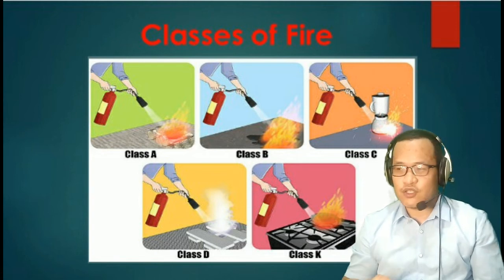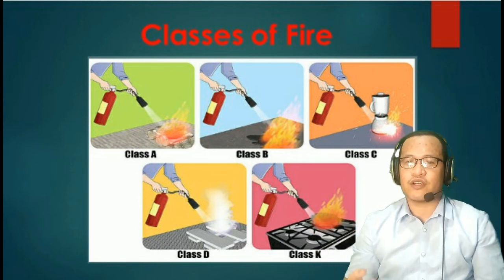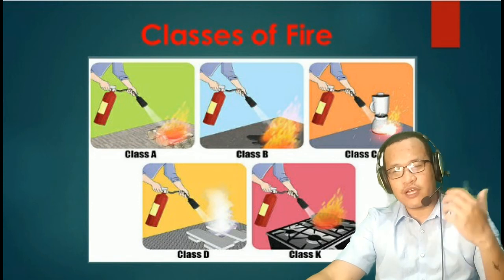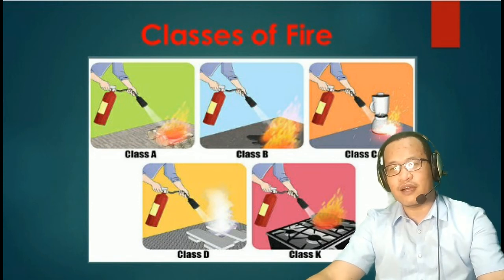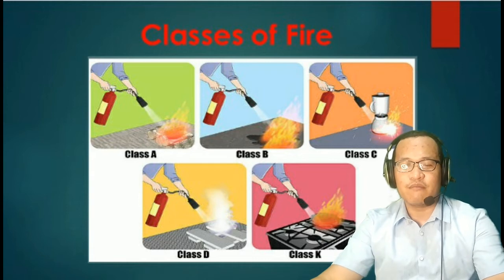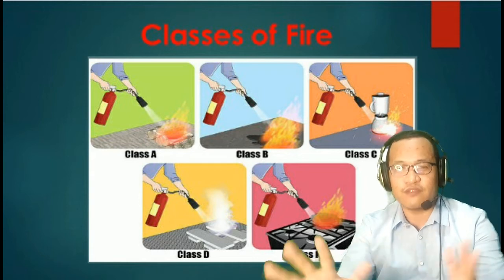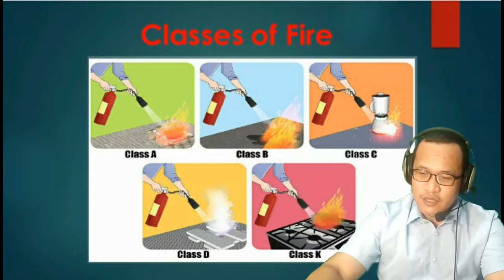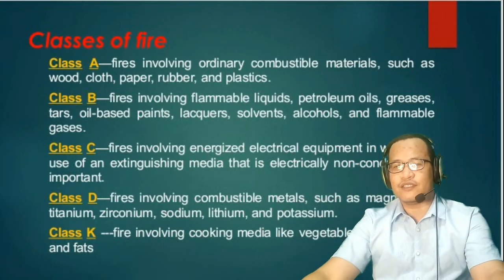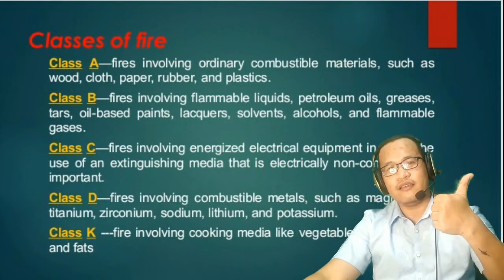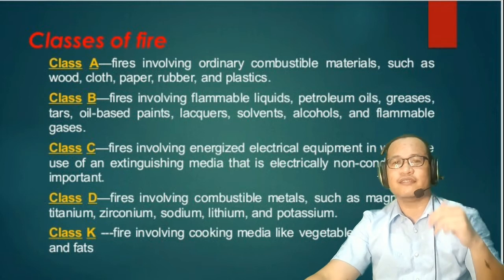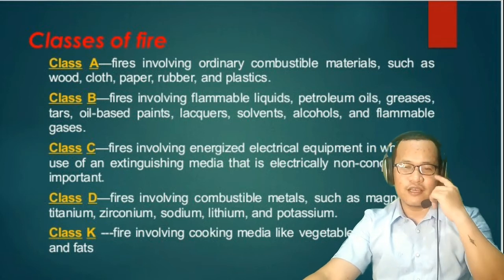We cannot simply take a fire extinguisher and put out any fire, because instead of putting it out, you may get electrocuted or make the fire even worse. With the classes of fire, we have five: Class A, Class B, Class C, Class D, and Class K.